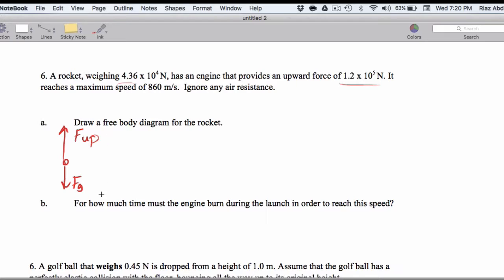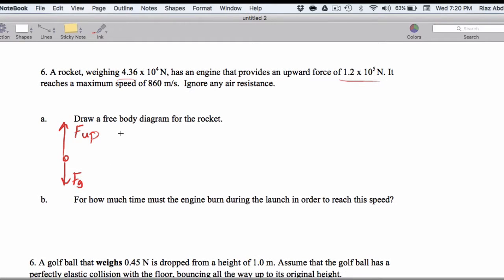The up force is definitely bigger than the down force, and because we are unbalanced, it asks how much time does the engine burn during the launch in order to reach the speed? So let's get the net force. That's going to be force up minus Fg. That's going to be 1.2 times 10 to the 5th. Now I'm going to do a little something with scientific notation here. Don't be alarmed. Minus 0.436 times 10 to the 5th. I'm going to leave you to figure this out.